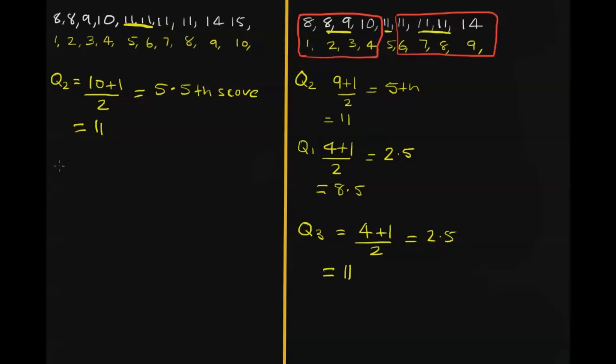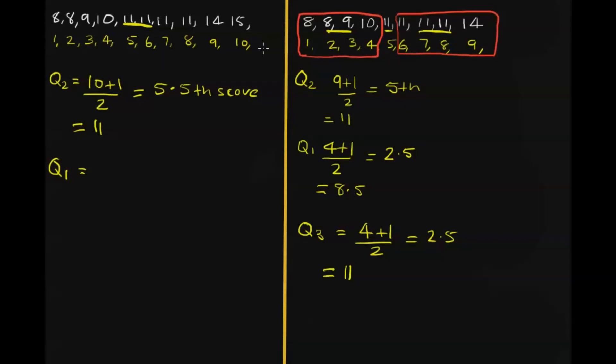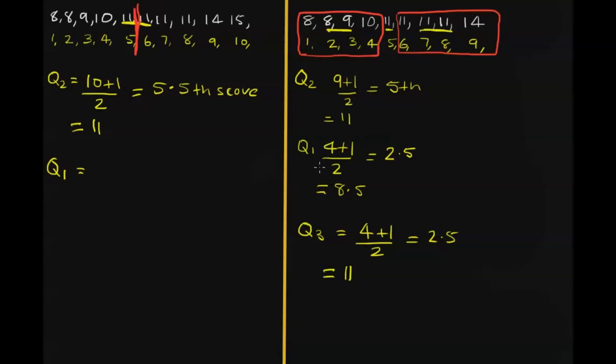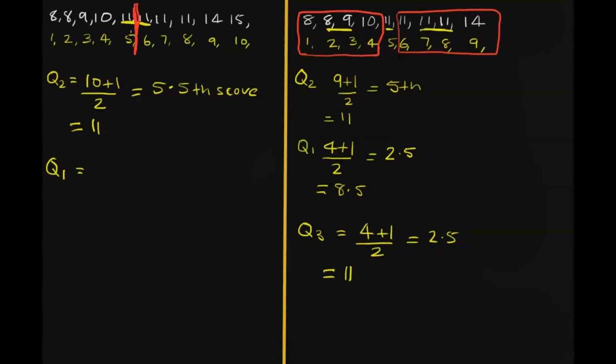Now we're going to find the lower quartile. Always do it in this order, it's always easier. Quartile 1. Now, this is where it's different to the odds. What we do is we divide the scores into two lots. Over here, we just kept the median out altogether for finding the upper and lower quartiles. But here, when we've got an even set of scores, we just divide them in two.